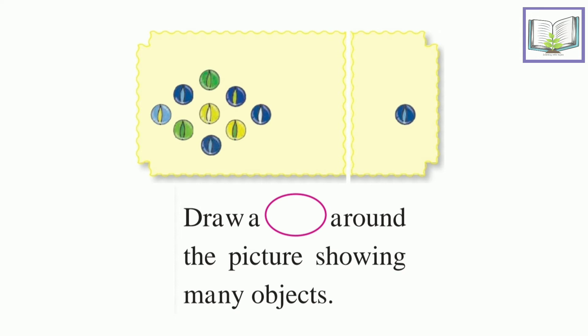So which picture shows many objects? Many means more than one. That's right, that shows many objects. Let's see another example.